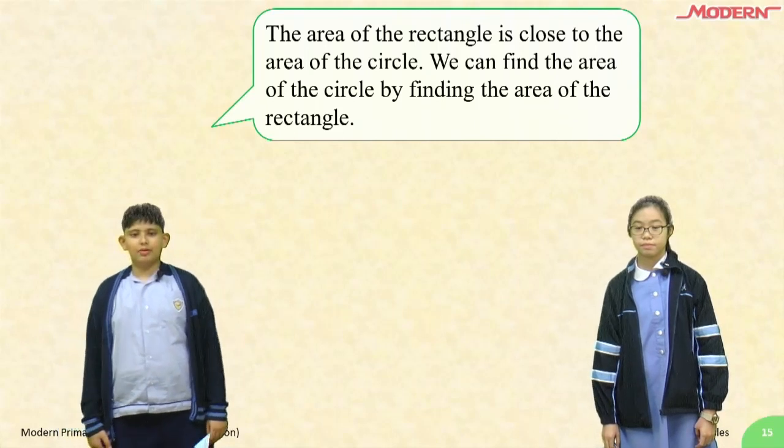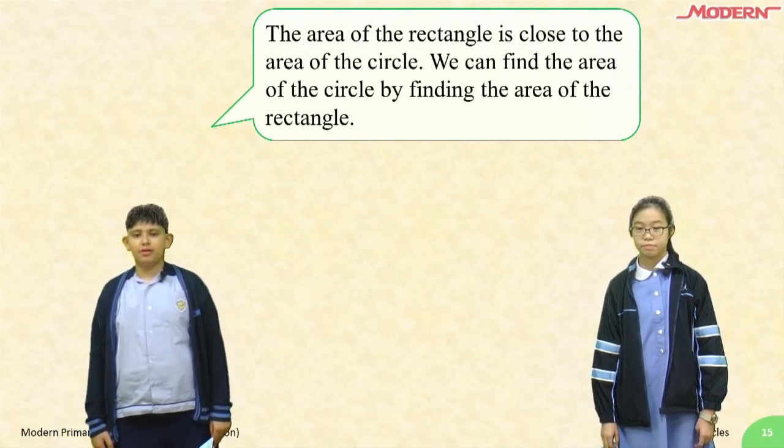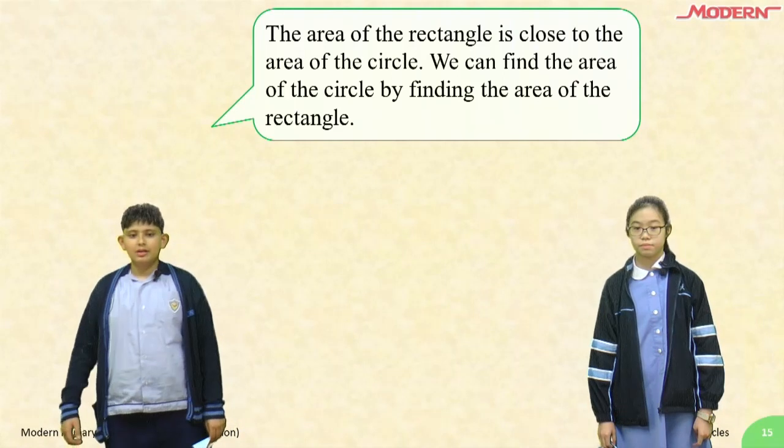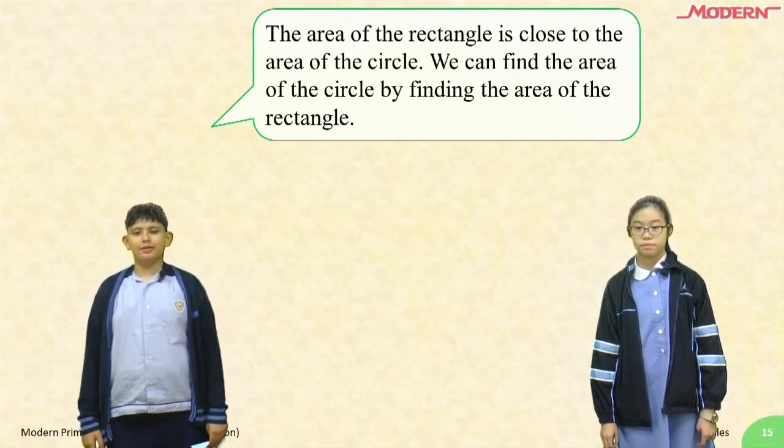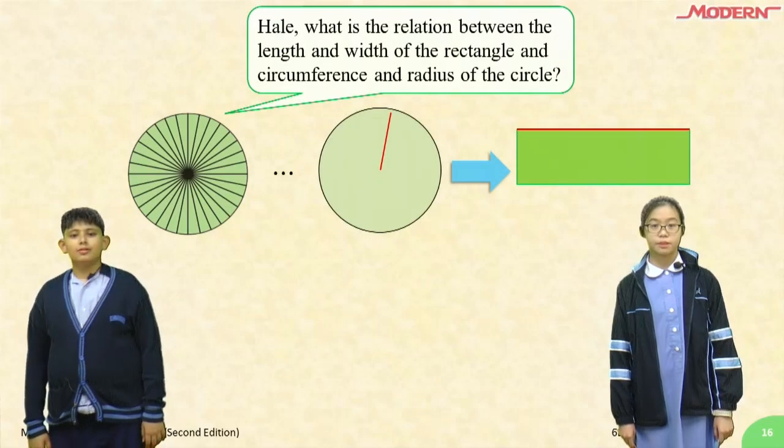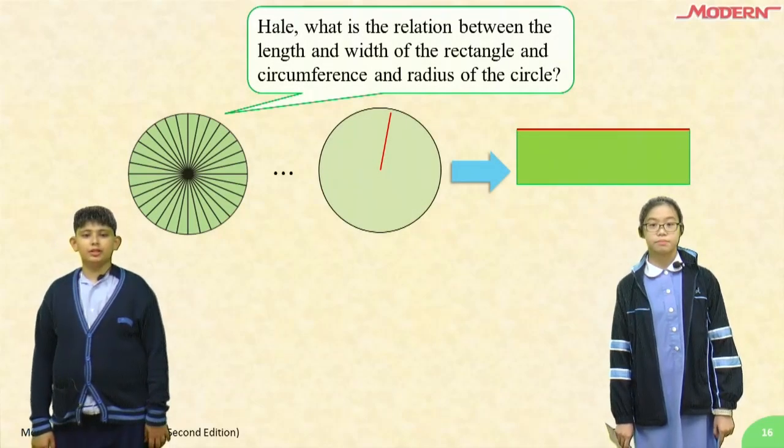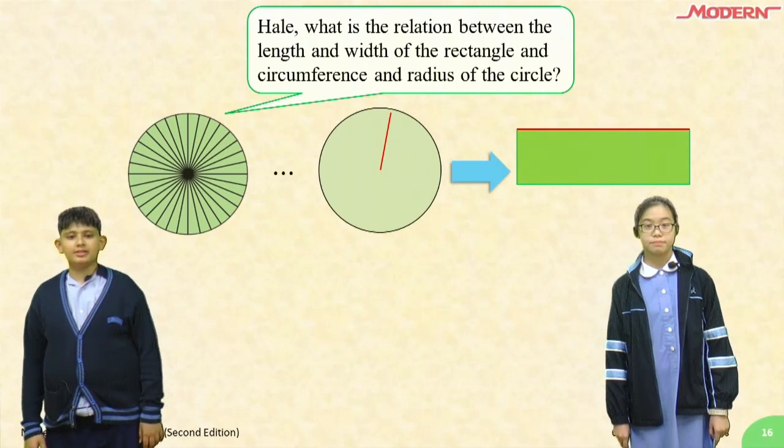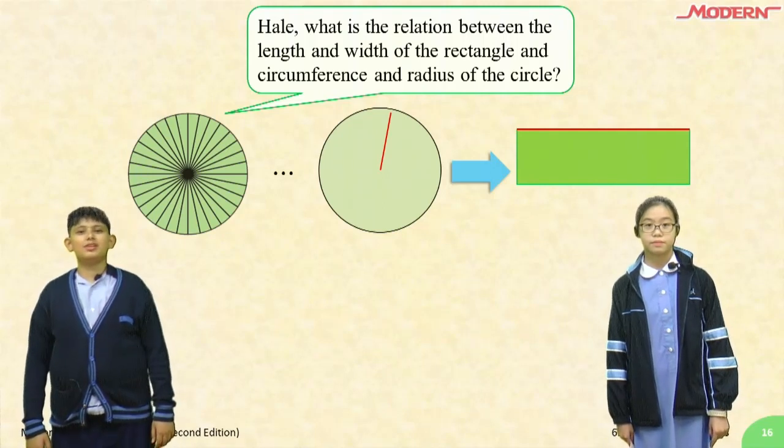The area of the rectangle is close to the area of the circle. We can find the area of the circle by finding the area of the rectangle. Hello! What is the relation between the length and width of a rectangle and the circumference and radius of a circle?